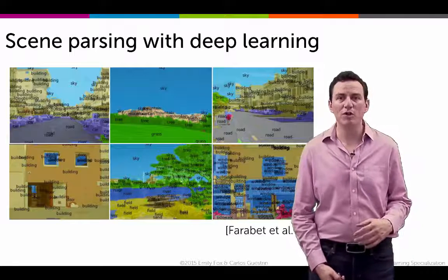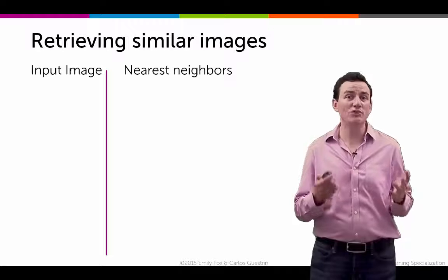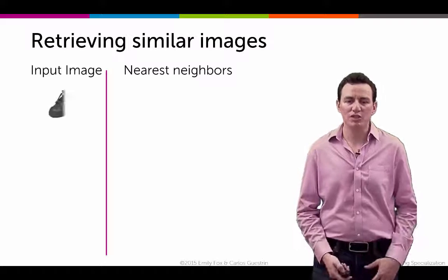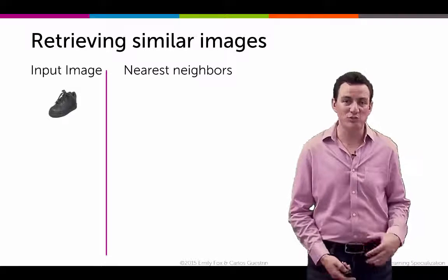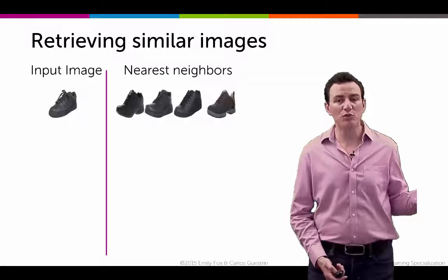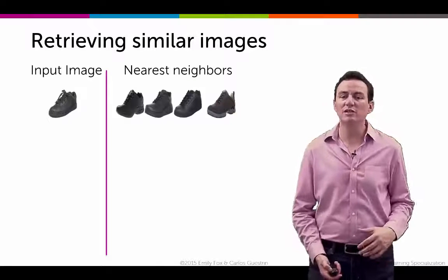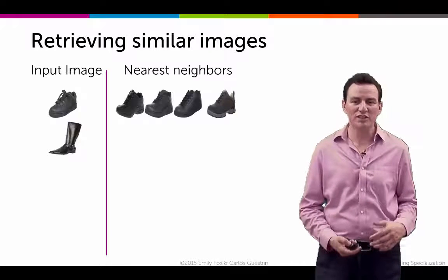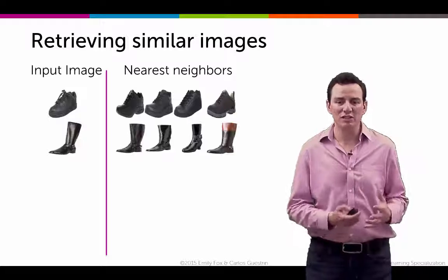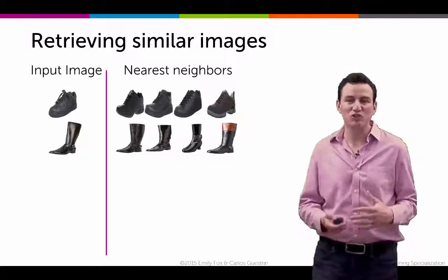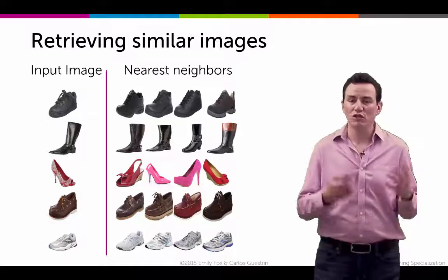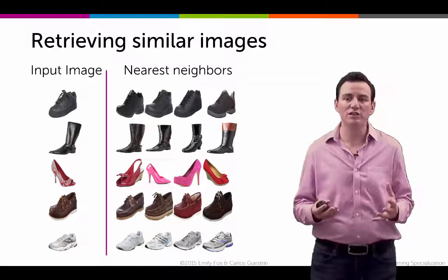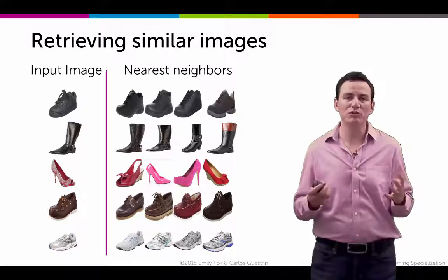Going back to the beginning of the module when we discussed a new way to shop for shoes or dresses — what we're really trying to do is retrieve similar images. If I give the input of a boring black shoe, the deep neural network outputs a bunch of boring black shoes. For a more stylish boot, it gives a variety of interesting boots. Similarly for heels, brown shoes, sneakers, and so on. This is the core concept used in the demo shown at the beginning of the module.